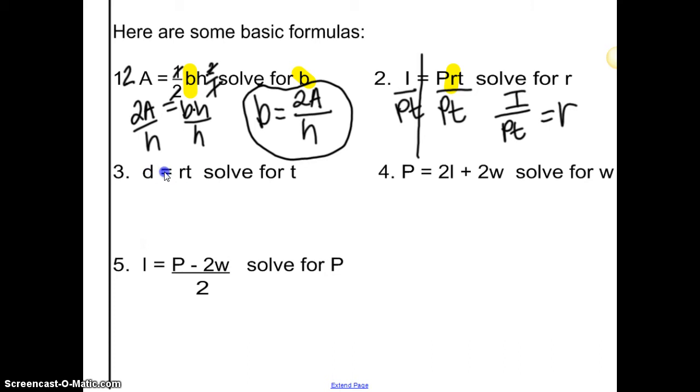This one. D equals rt. I bet you could do that one for yourself. Ready? Go. Yep. Divide by t. So, d over t equals rate. We, last year, did the dirt triangle. Do you remember that? Distance equals rate times time. If you had the distance and the rate, you divide. If you have the distance and the time, you divide. If you have the rate and the time, you multiply.